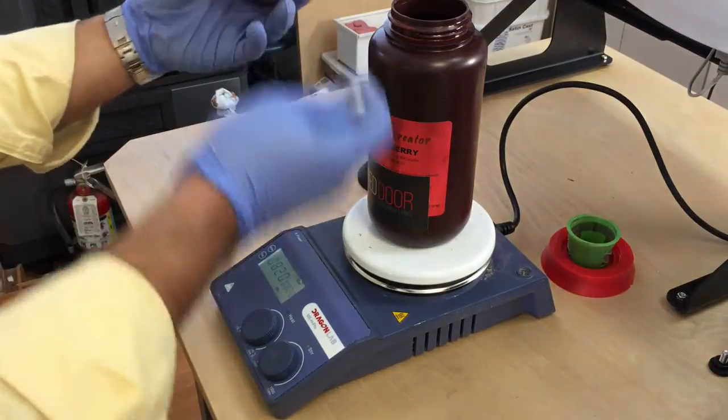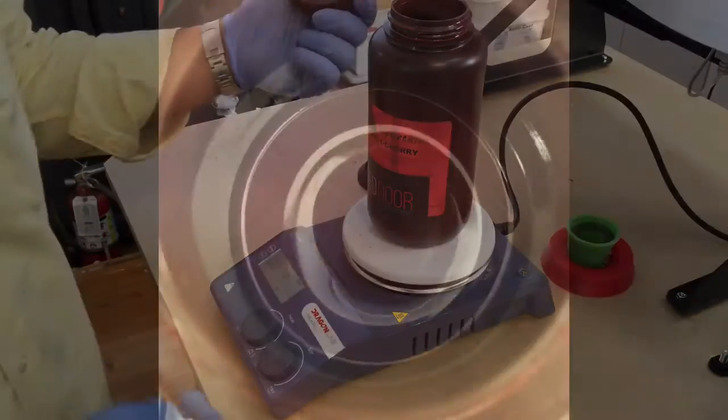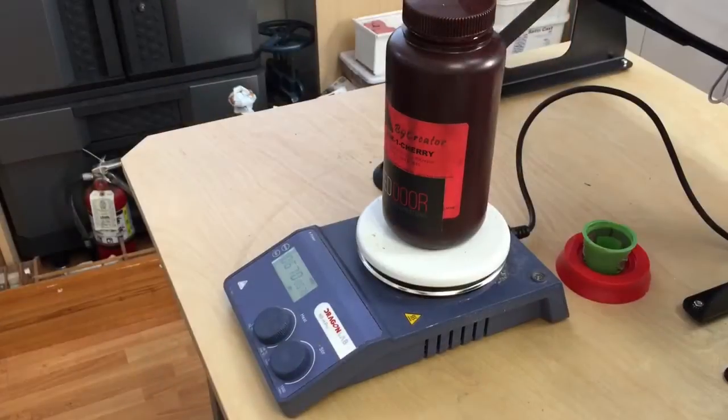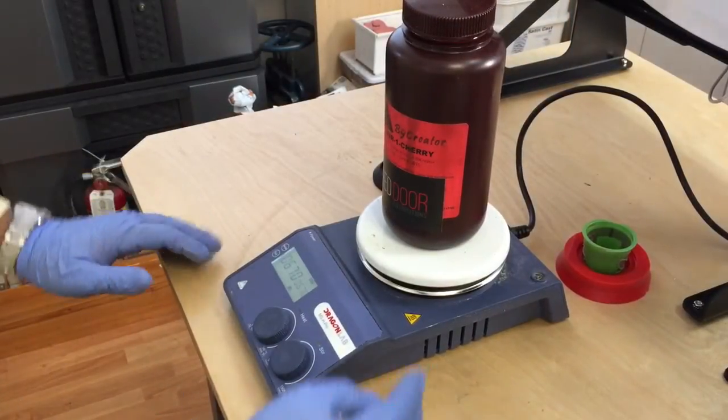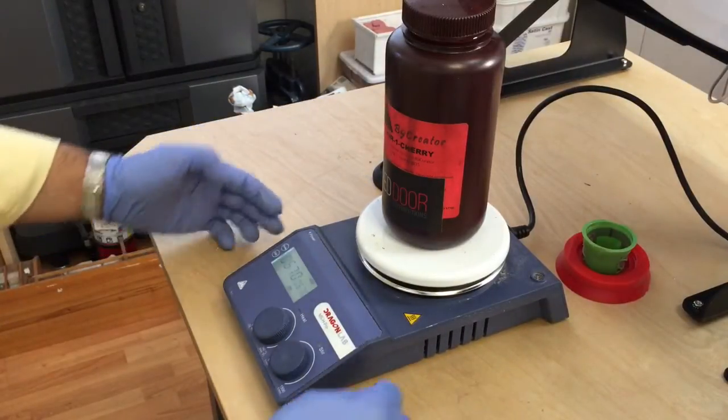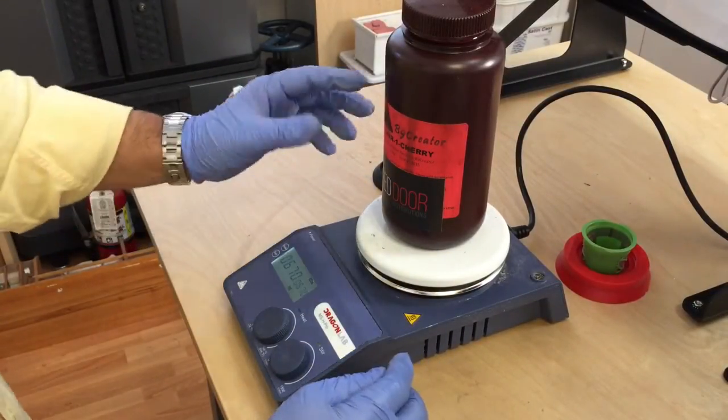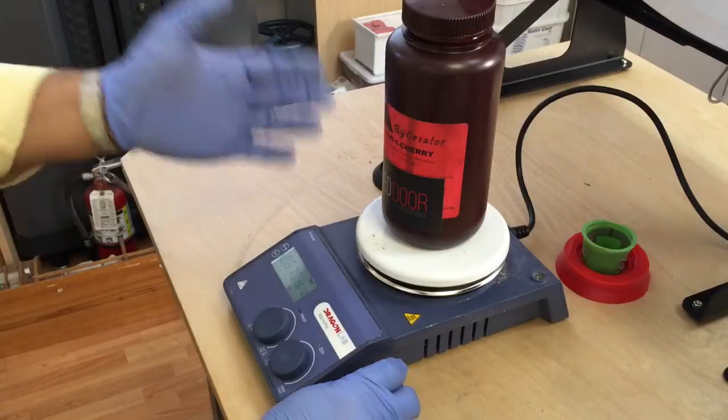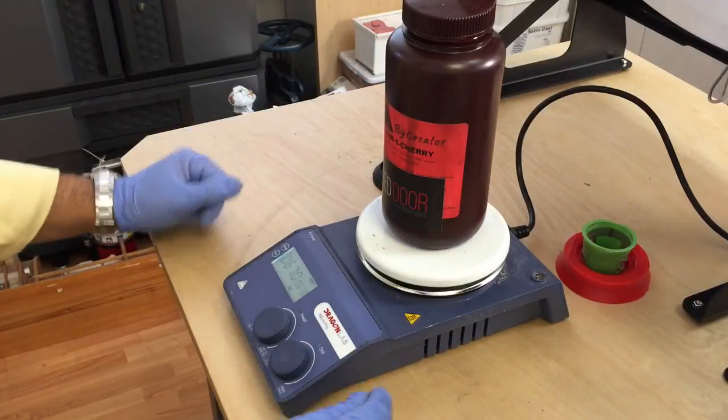Now you can always just open the cap, look inside and make sure that you do have that nice vortex. Keep in mind this works great with about a half a bottle of resin. If you do have a full bottle of resin and you wish to use one of these, I would suggest just pouring about half of this into another container and then you'll be able to use this no problem.